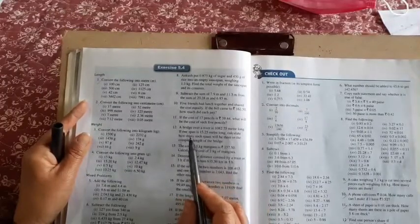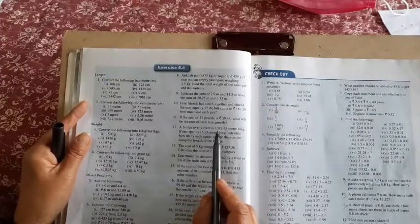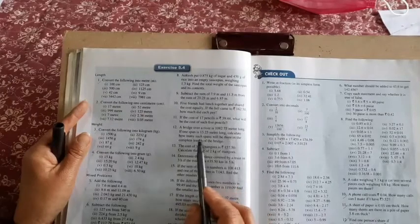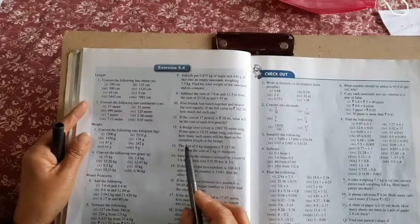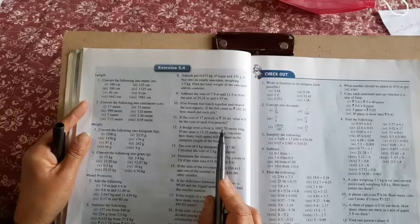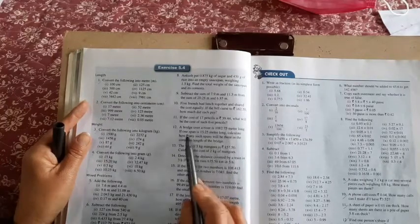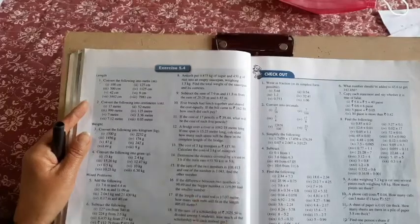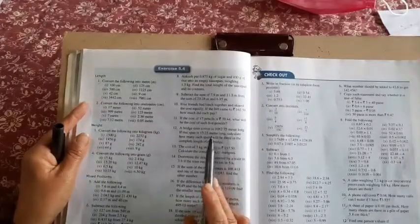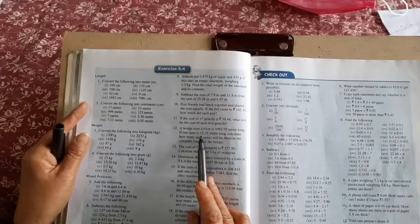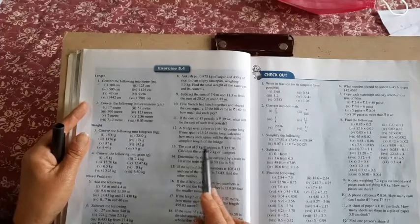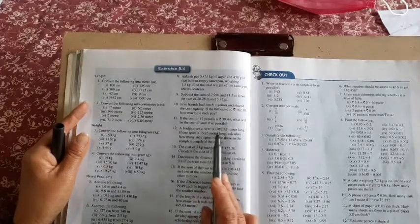Question number 12: A bridge over a river is 1082.75 meters long. If one span is 15.25 meters long, calculate how many such spans will be there in the complete length of the bridge. You have to divide 1082.75 by 15.25. That will give you the number of spans required to complete the length of the bridge. This is division, both are in meters, so no conversion is needed.